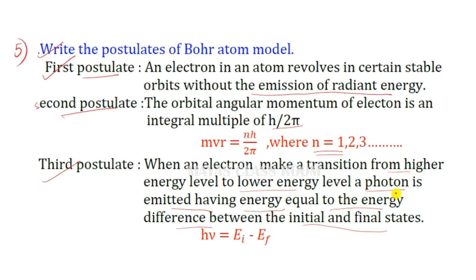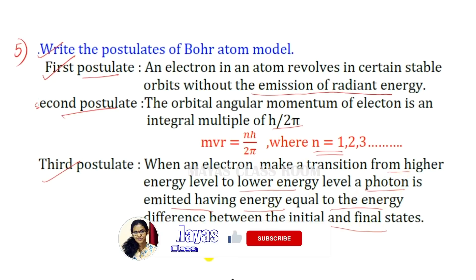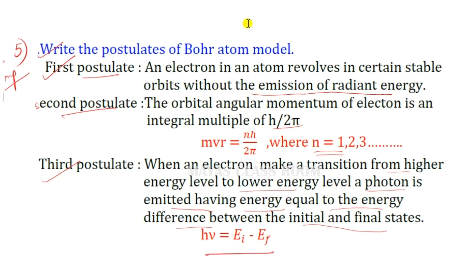The energy difference between the initial state and the final state: the equation is hν = Ei − Ef. These are the postulates of the Bohr atom model.